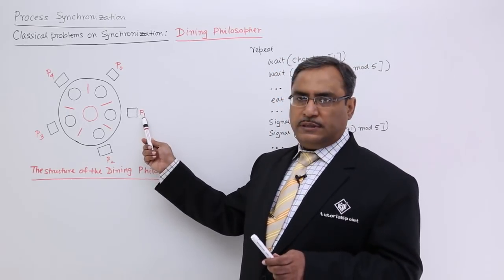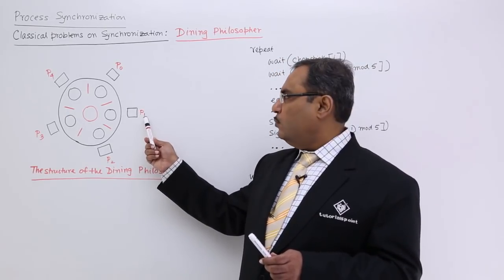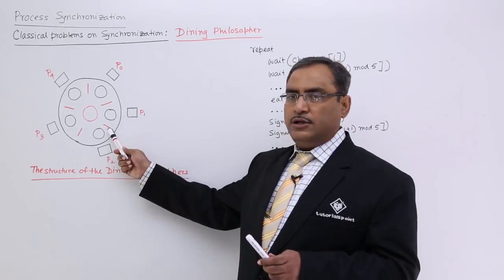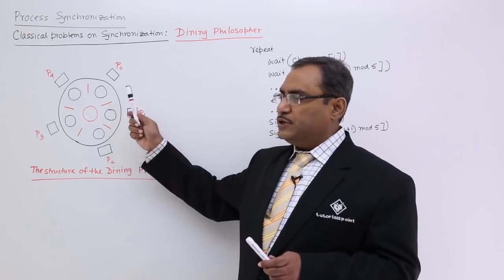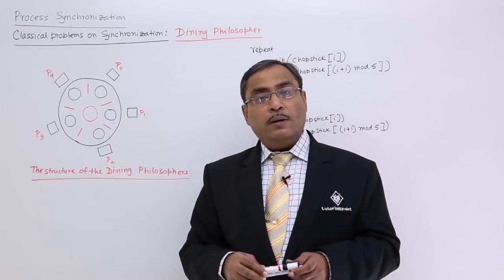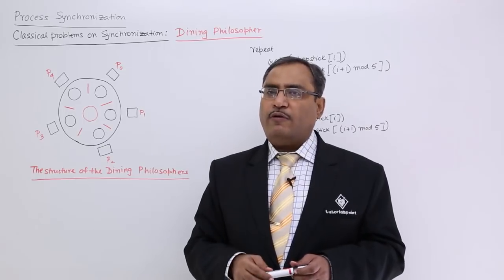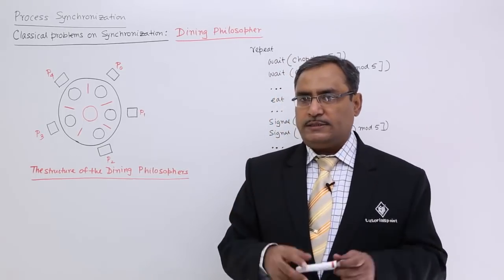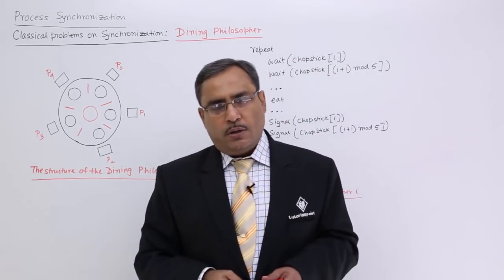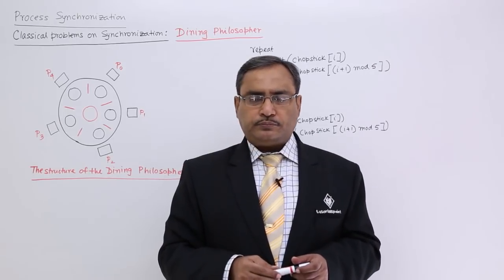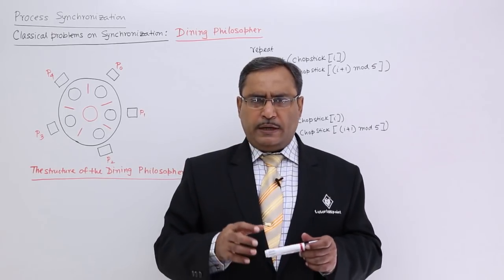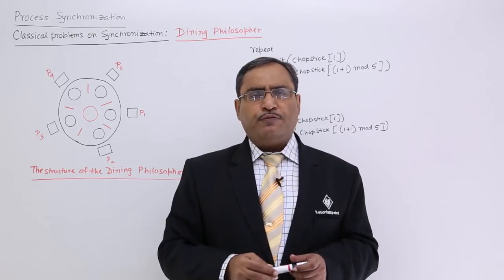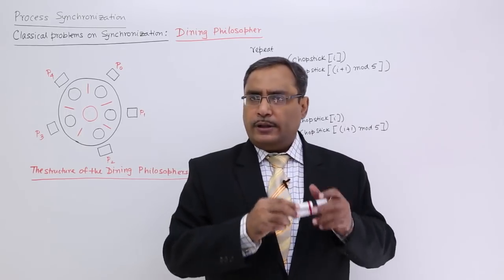For example, philosopher P1 will be accessing chopstick number 1 and chopstick number (1+1) mod 5, which is 2. In this way things will take place. Now let me tell you the problems, go for the solutions, and before that let me tell you the algorithm.